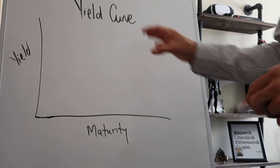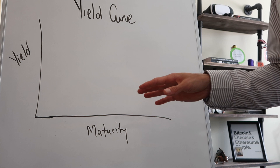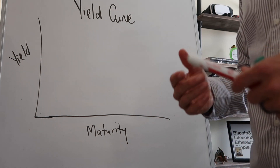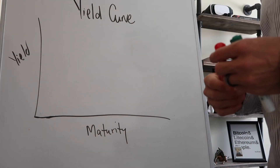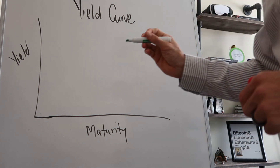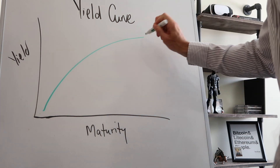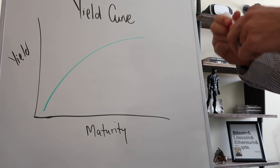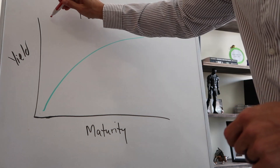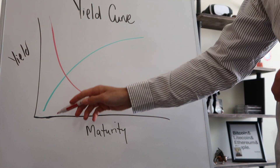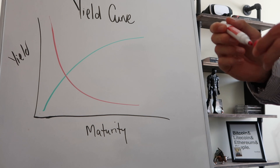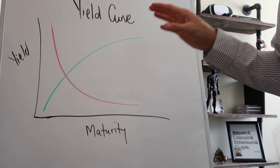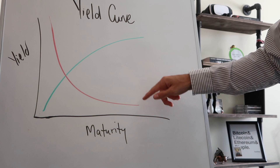For the visual learners out there, here's your yield curve drawing — we're going to put the two different types of curves on there. You have your yield on the y-axis and maturity on the x-axis. As you go up the y, the interest rates are going higher; as you go out the x, maturity is going to be longer. A normal yield curve has short-term rates low and long-term rates higher. The inverted yield curve looks the opposite — shorter-term maturities have higher yields and longer-term maturities have lower yields. This is the visualization of the normal versus inverted yield curve.